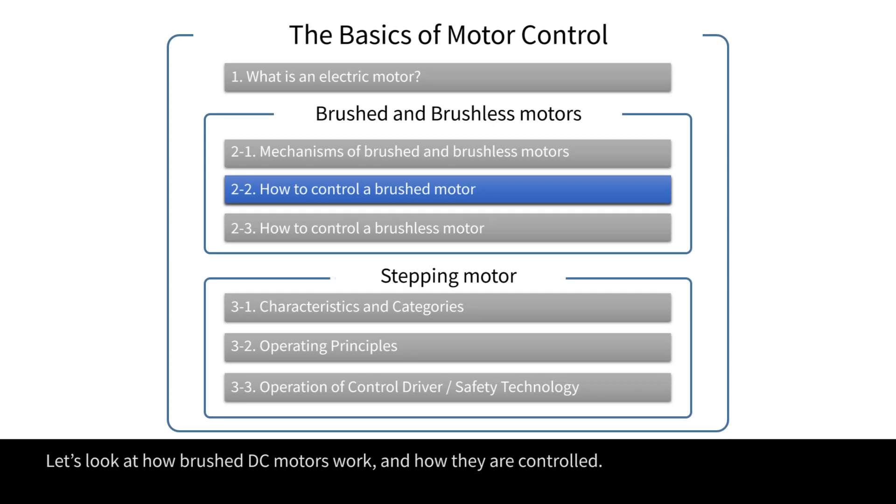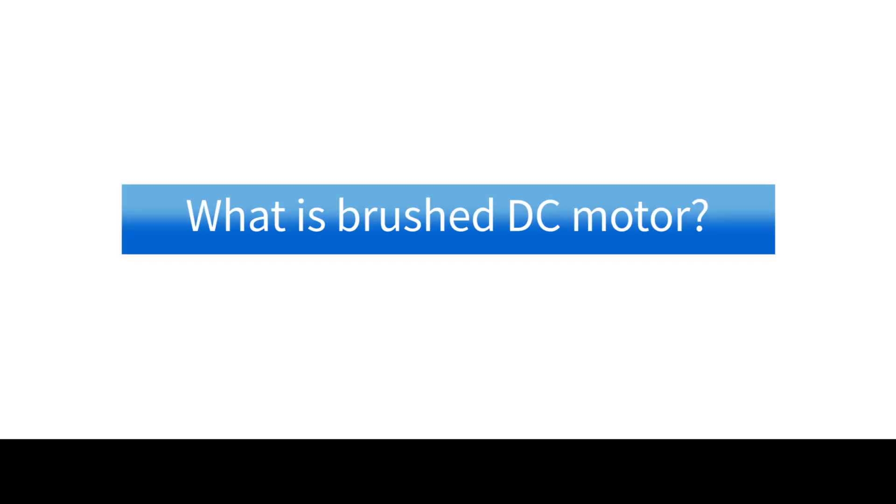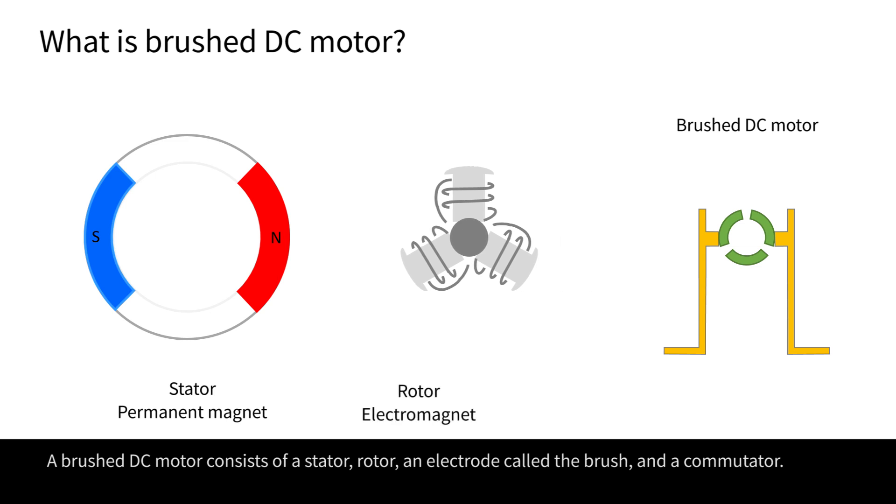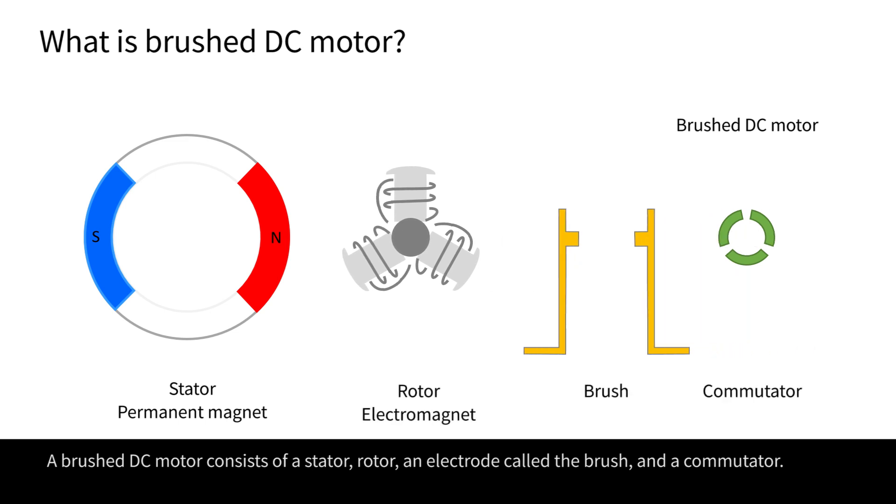Let's look at how brushed DC motors work and how they are controlled. A brushed DC motor consists of a stator, rotor, an electrode called the brush, and a commutator.